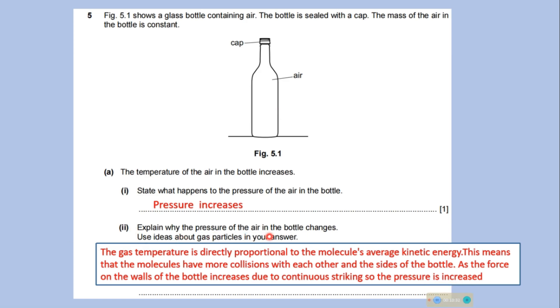Explain why the pressure of the air in the bottle changes. The gas temperature is directly proportional to the molecules average kinetic energy. This means that the molecules have more collisions with each other and the side of the bottle. As you increase the temperature, the average kinetic energy of the gas molecule will also increase. And there will be more collisions with each other and with the side of the bottle. So, as the force on the walls of the bottle increases due to continuous striking, the pressure is also increased.